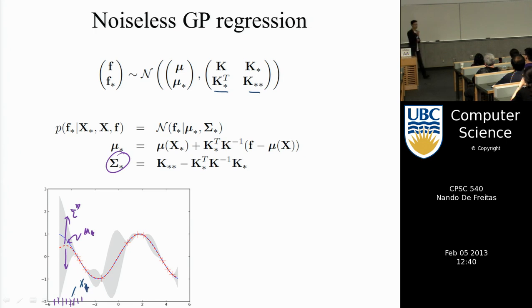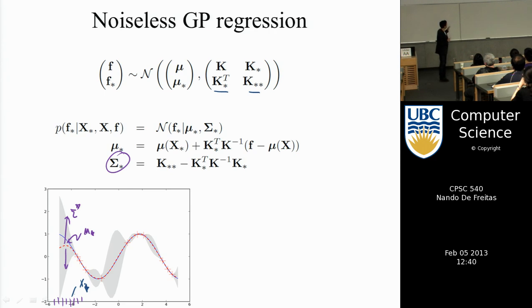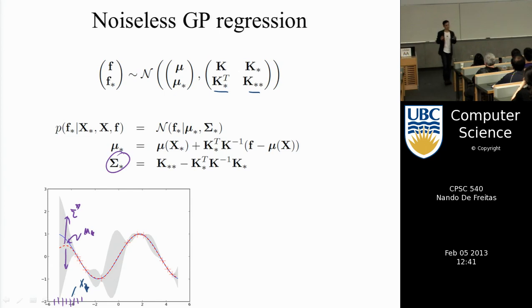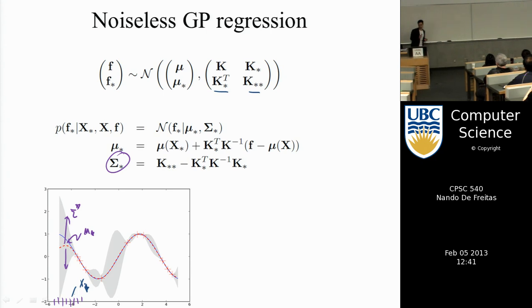You use your X's to construct matrices of similarities between the training set and the test set, and the self-similarities in the training set — which is just K double-star. Once you've constructed these similarity matrices, F-star is unknown, F is known from your training data, and prediction is just computing the posterior distribution of F-star given F. There is an analytical expression for the mean and variance. I create a fine grid of X-star points, compute the mean and variance for each, and plot it — showing the mean in blue and the true unknown function in red.